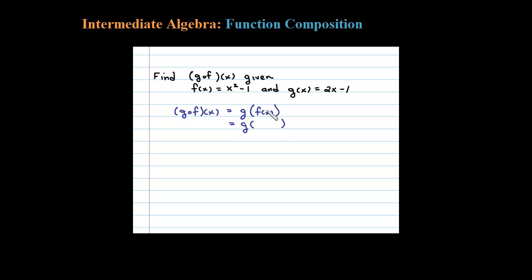Let's see what F of X is. F of X is X squared minus 1, so let's replace that in there. Now we want to find G of X squared minus 1. In other words, wherever there's an X in G, I'm going to plug in X squared minus 1.